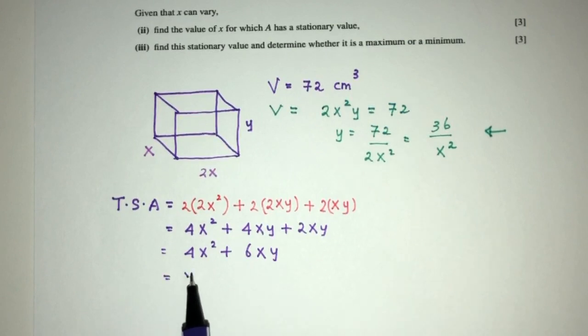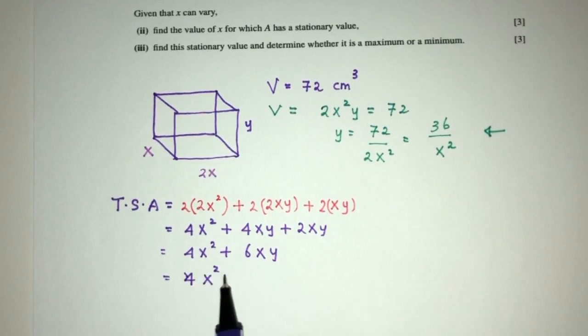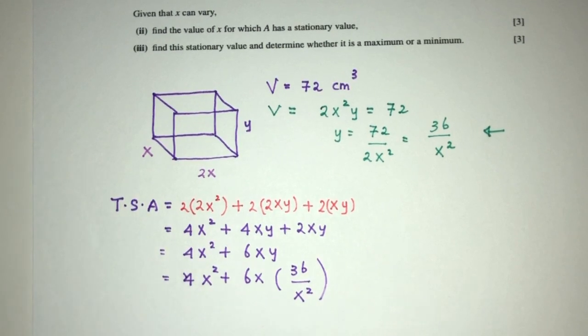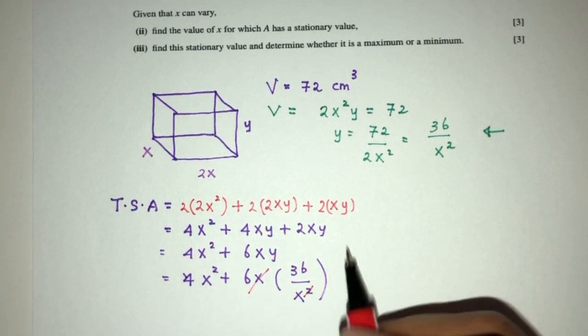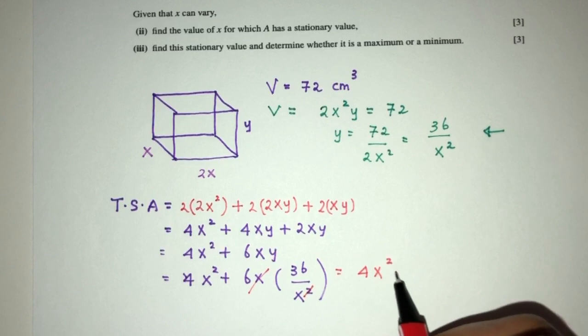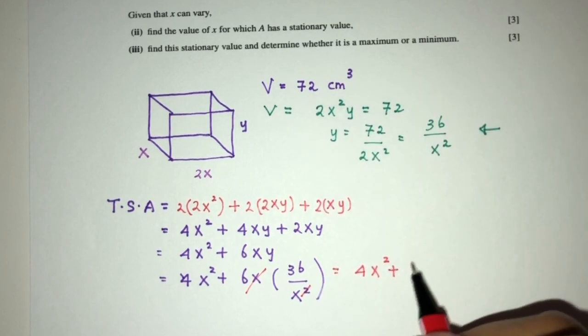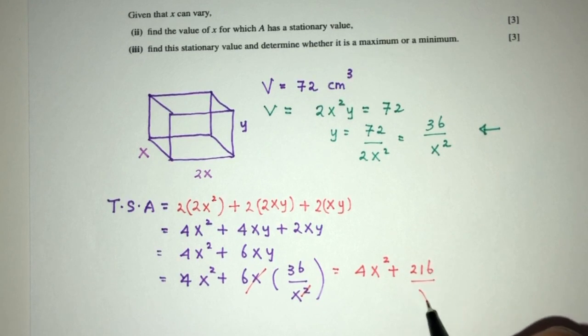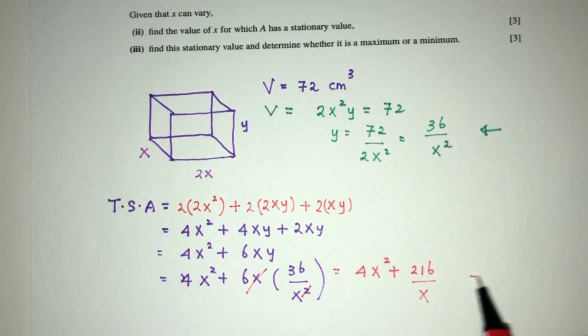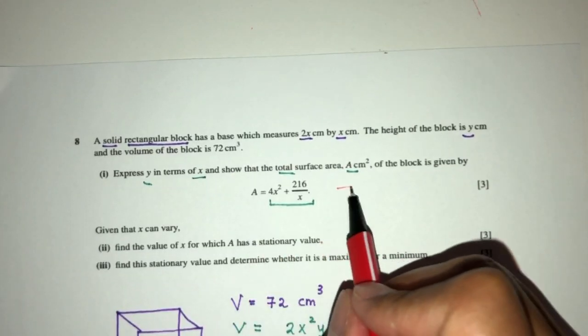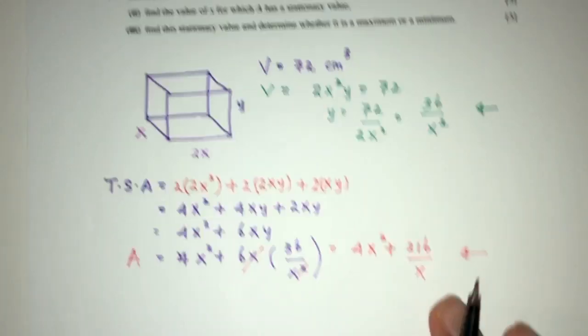Now again, we have something in y here, we have to change to x. Y is 36 over x squared. This will cancel out with this, so you will have 4x squared plus 36 times 6 will be 216 over the value of x. So TSA will be this value. This is again shown as required exactly, and this is shown.